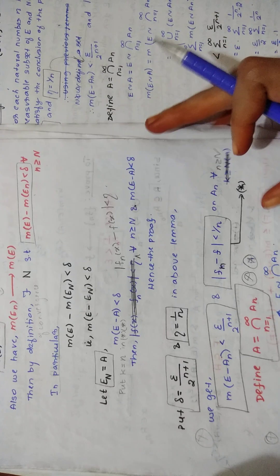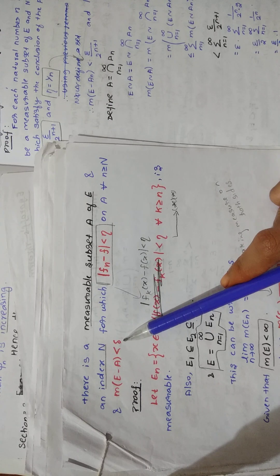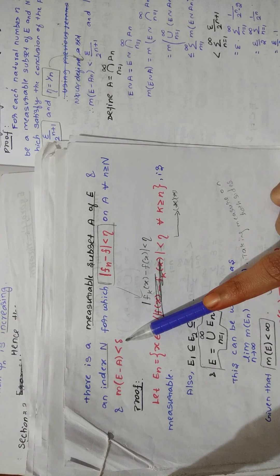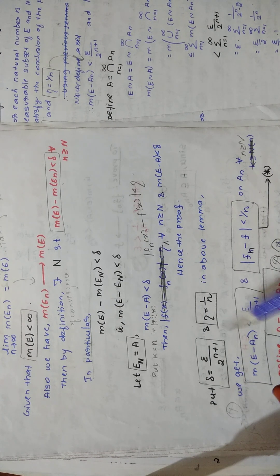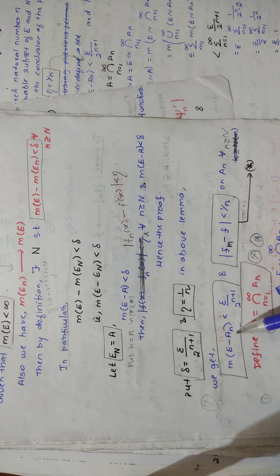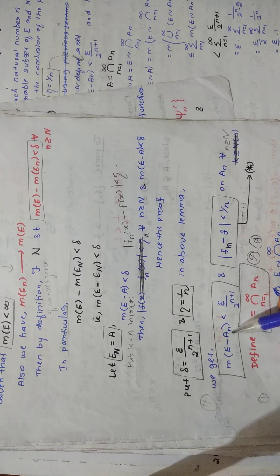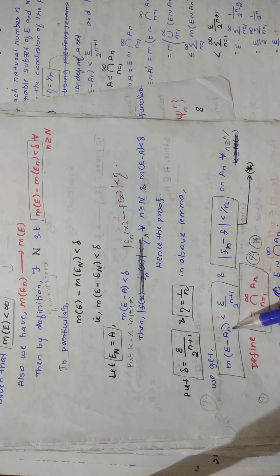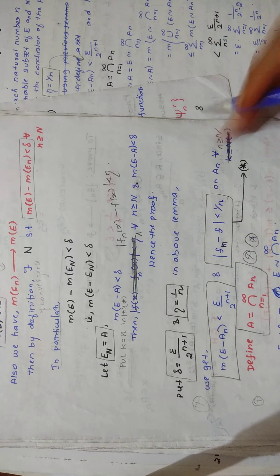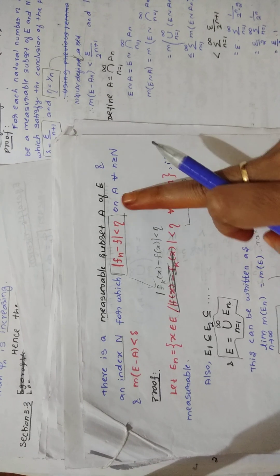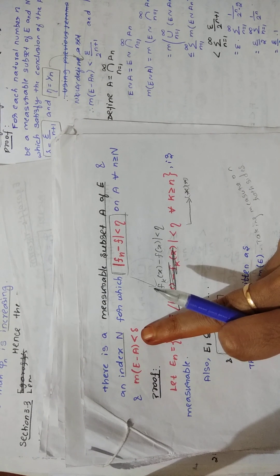So here what you are doing is putting delta equal to epsilon by 2^(n+1) and eta equal to 1/n. When you substitute like that, you get M(E \ A_n). Keep one thing in mind: in the place of delta you are substituting epsilon by 2^(n+1), so there is an n involved. When substituting this value, you put n in the subscript of A as well, changing the statement accordingly. So on A_n, for all n greater than or equal to N, M(E \ A_n) is less than delta.